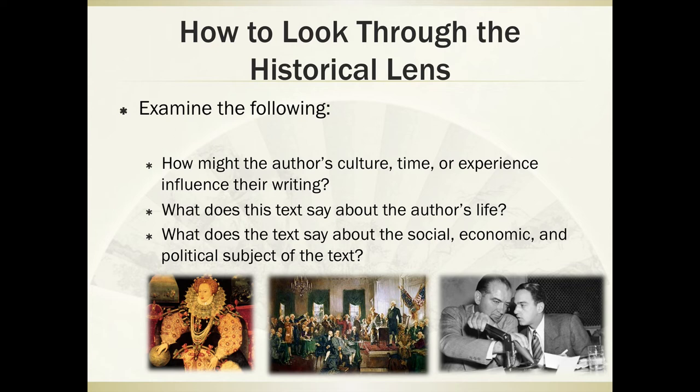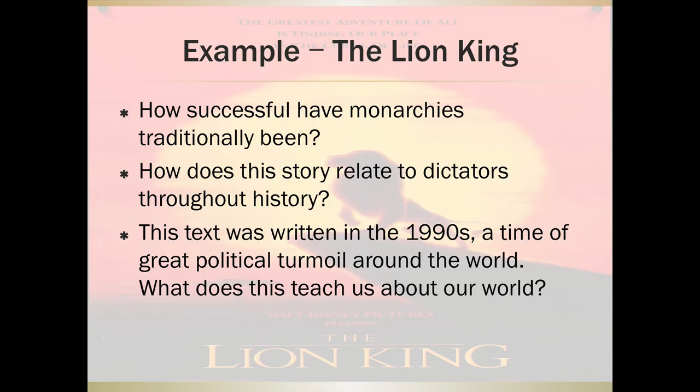How do we look through the historical lens? We examine how the author's culture, time, or experience might influence their writing. If someone was writing in the 1950s during a time of great conservatism and fear of communism, how might that shape their portrayal in the story? What does the text say about the author's life and the historical context of when it was written? What does the text say about social, economic, and political subjects? Perhaps it's a book written in 2018 about the Constitutional Convention — what does that teach us about history now and history at the original time? For a quick application, consider the Lion King.